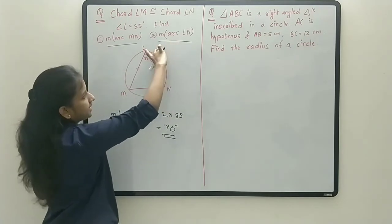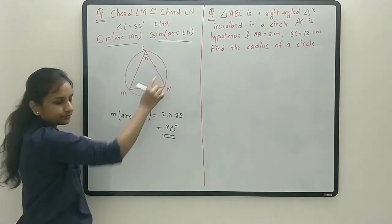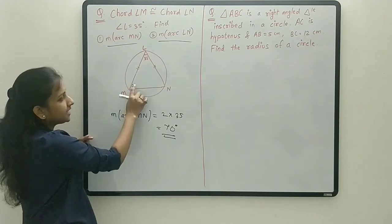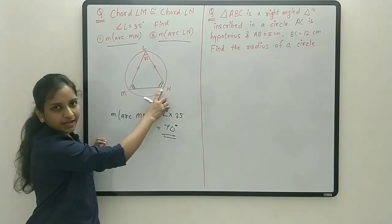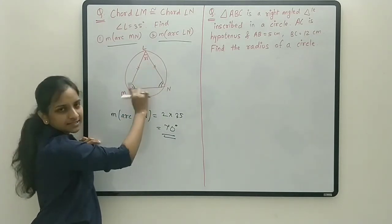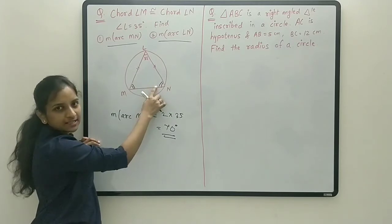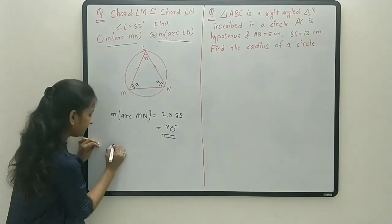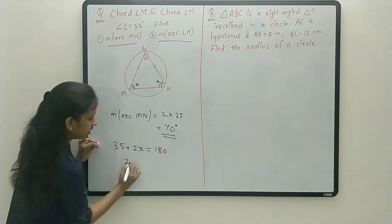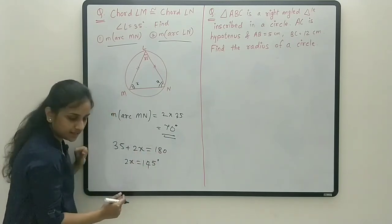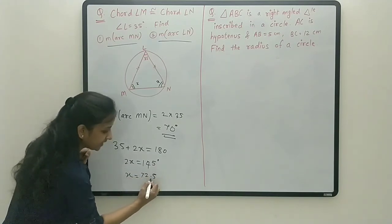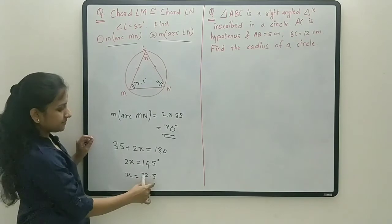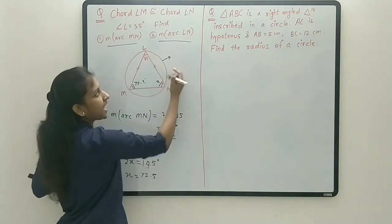Now let's find the measure of arc LN. We need the angle at M. Since this is an isosceles triangle, angles opposite equal sides are equal, so angle M equals angle L. In this triangle, one angle is 35 degrees and two angles are congruent: 35 + x + x = 180, so 2x = 145, giving x = 72.5 degrees. Since angle M is 72.5 degrees, the measure of arc LN is double that — 145 degrees.